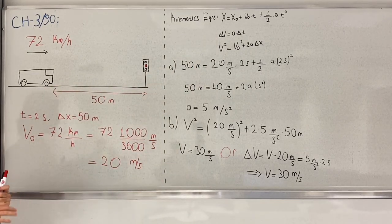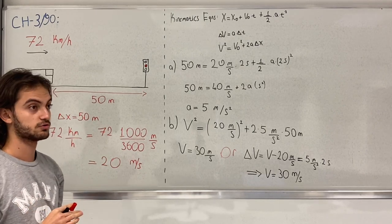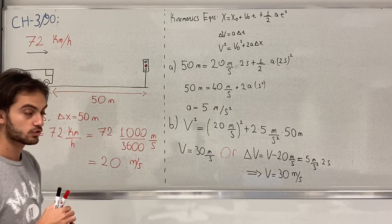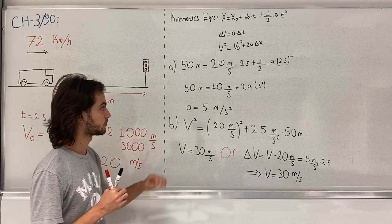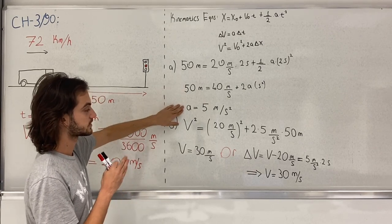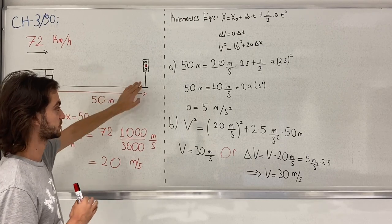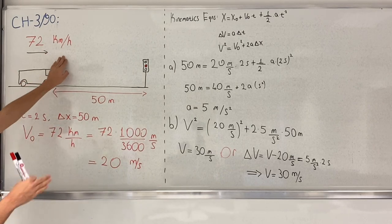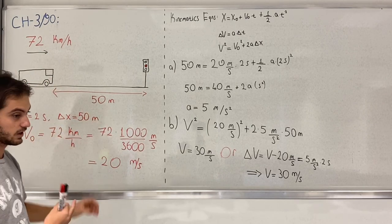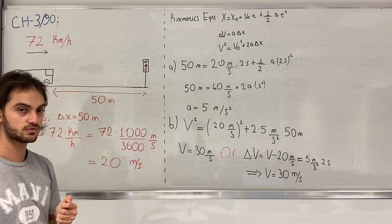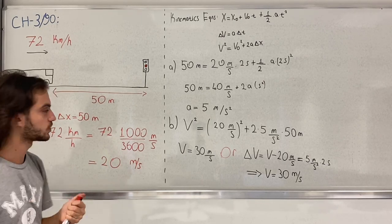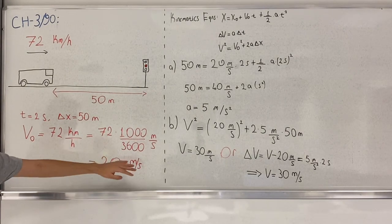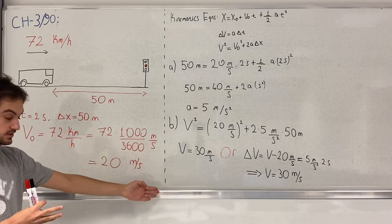We should look at what units we'll need for this question. In part A we're asked for the acceleration required for the ambulance to reach the light in time. We have 72 kilometers per hour and 50 meters. Dealing with meters and seconds would be much easier, so I converted the initial velocity to meters per second, as you can see.